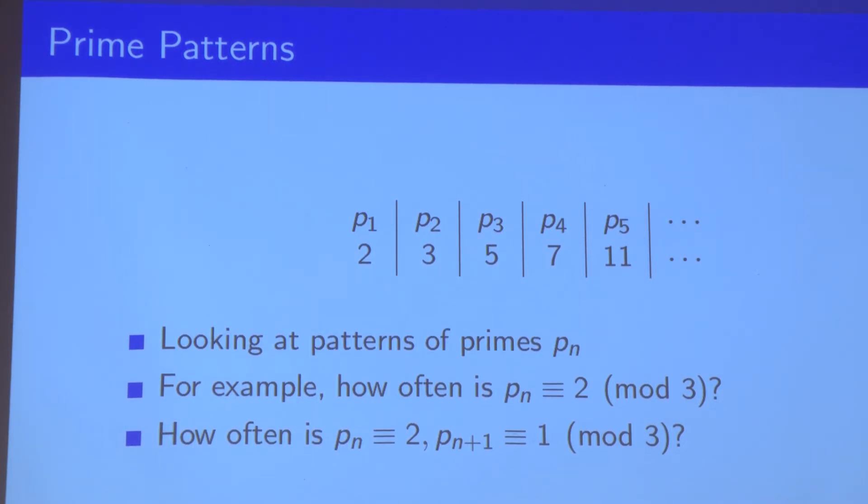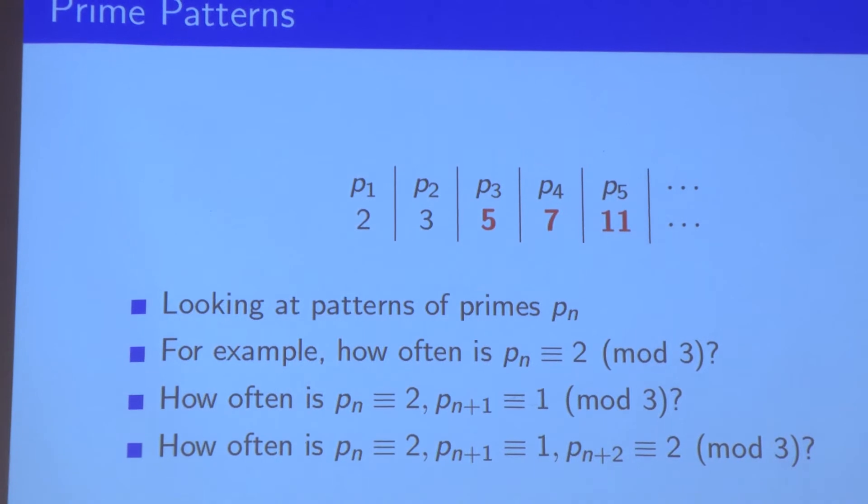Here we have the pattern where P_n is congruent to two and P_{n+1} is congruent to one mod three. I've highlighted again an example of such a pattern. And of course, we can go to triples and so on.